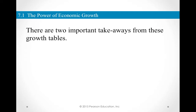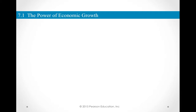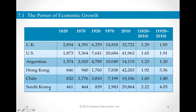So what's the takeaway? The first concept is catch-up growth. Poor countries tend to grow faster and catch up to rich countries as they adopt the production technologies of the richest countries. This explains the phenomenal economic growth rates of countries like China, India, Brazil, and Russia. You can also see this from the example of Argentina, which failed to grow to its full potential. With a growth rate of 1.23% versus England's 1.29%, the difference in outcomes over time is much larger than it might appear.